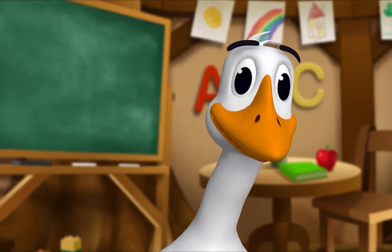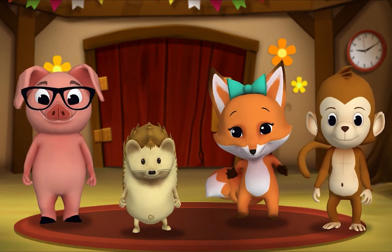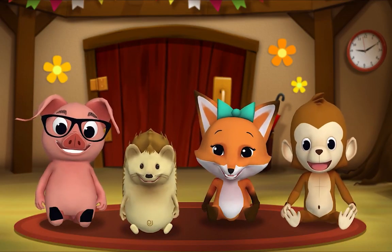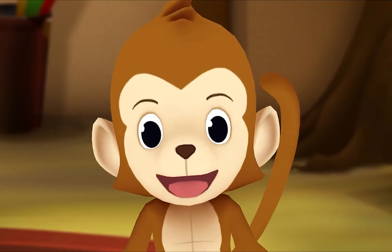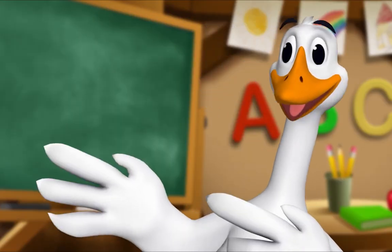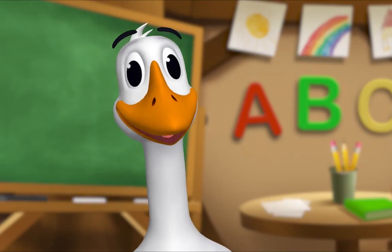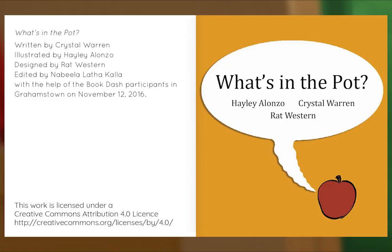It's story time! Yay! Gather around everyone. What book are we reading? We're reading this one. It's called 'What's in the Pot?' In this story, Sam wants to know what's for dinner. Let's see if we can guess. Let's begin. 'What's in the Pot?' Written by Crystal Warren, illustrated by Haley Alonzo.